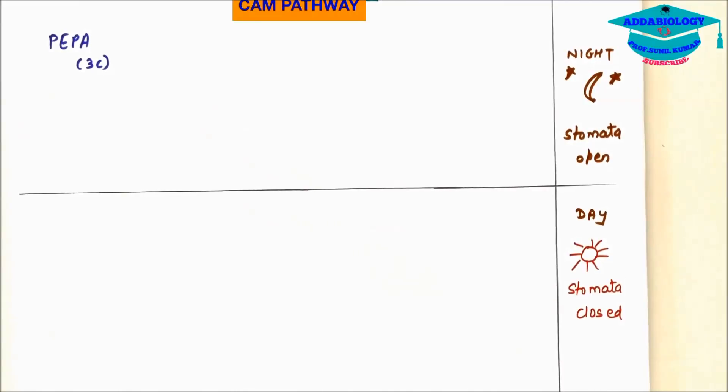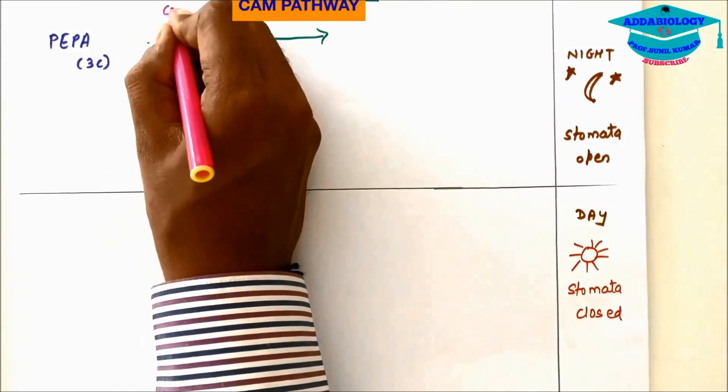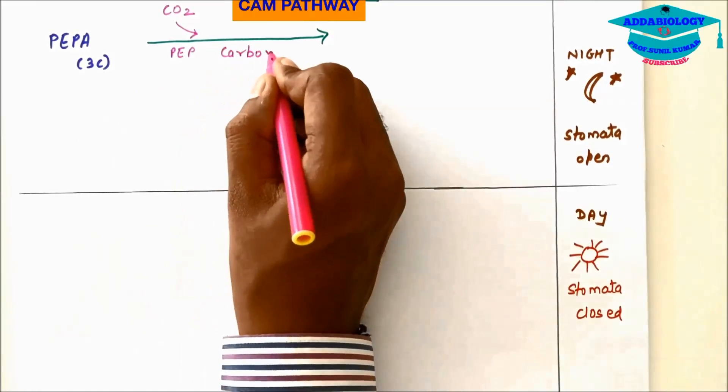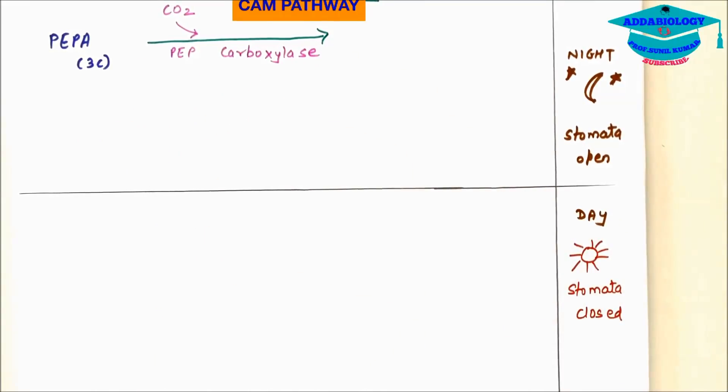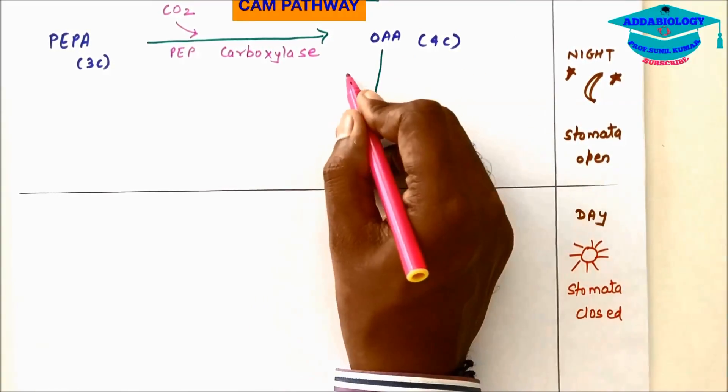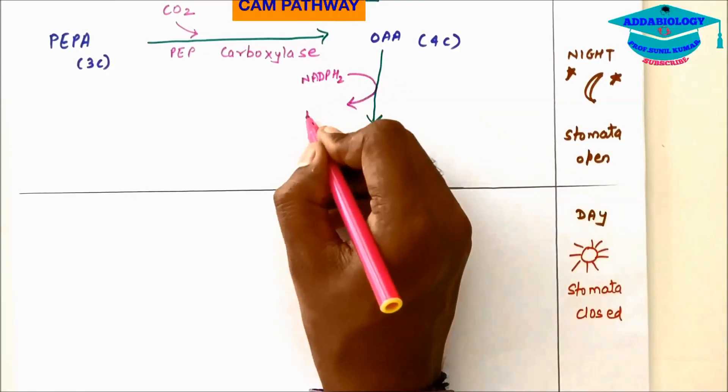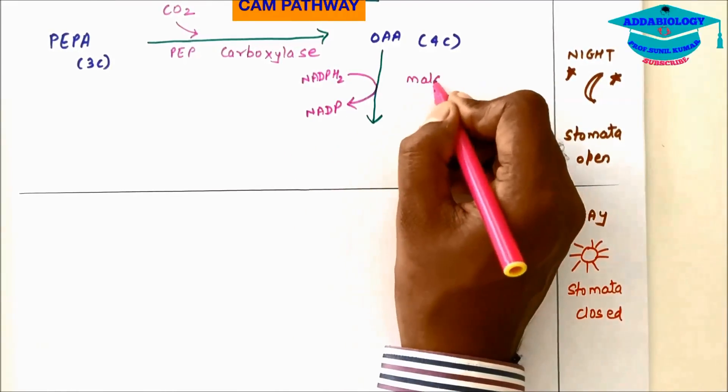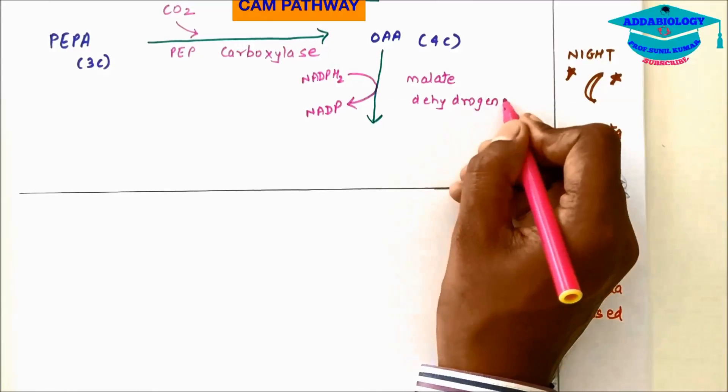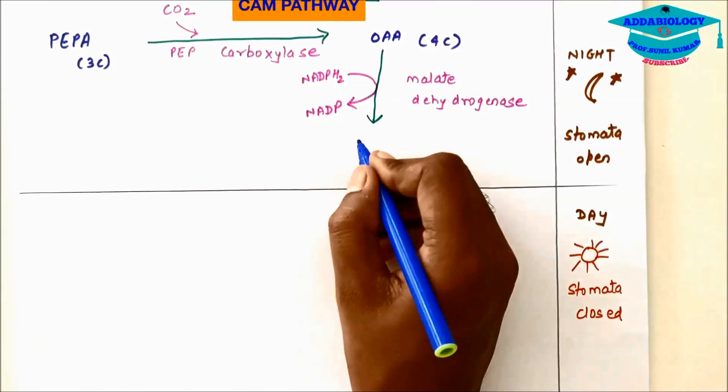PEPA which is 3 carbon compound acts as first carbon dioxide acceptor during night time when stomata is open. Carbon dioxide combines with PEPA in presence of enzyme PEP carboxylase and forms OAA oxaloacetic acid 4 carbon compound. OAA undergoes reduction and forms malic acid in presence of enzyme malate dehydrogenase.